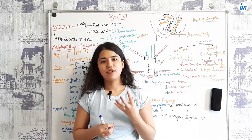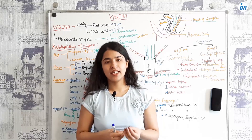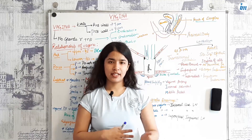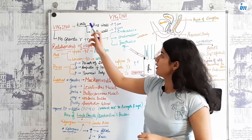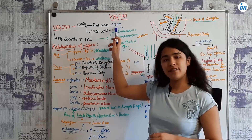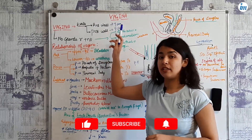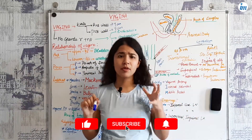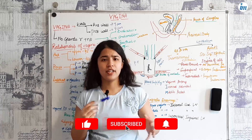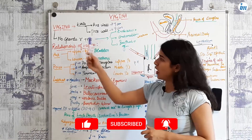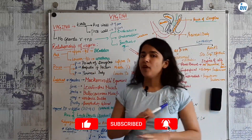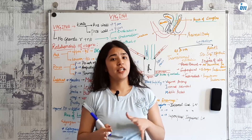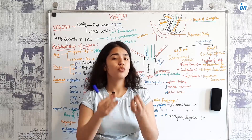Vagina is a fibromuscular organ comprising of two walls — the anterior and the posterior wall. The anterior wall is 7 centimeters whereas the posterior wall is 9 centimeters, so it is a little bit longer than the anterior one. The vagina doesn't have any gland.